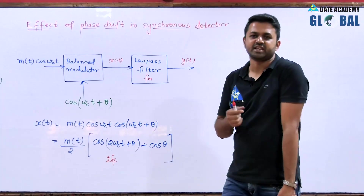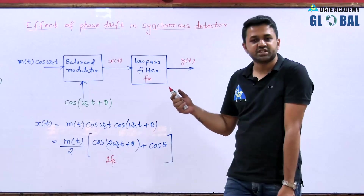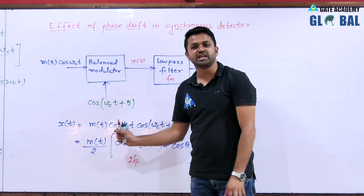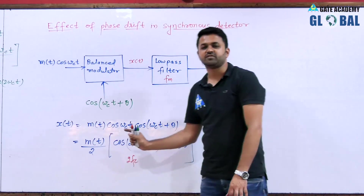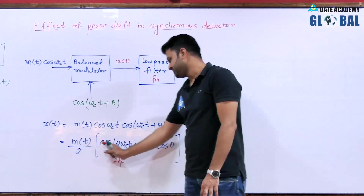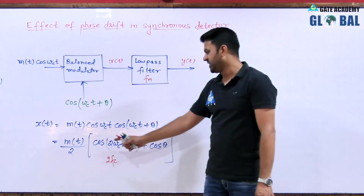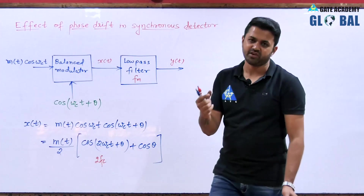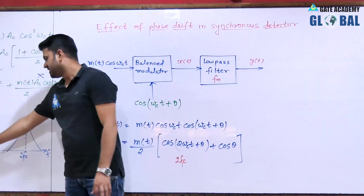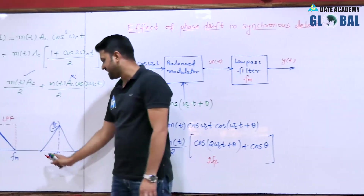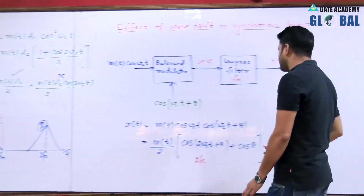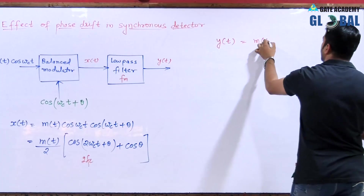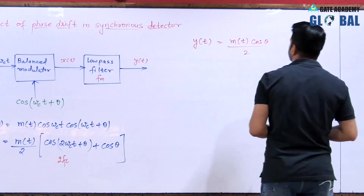Theta can be anything — 10°, 5°, 45°. Whatever the phase shift, it gives a constant value. This constant value will affect only the amplitude of the message signal; it will not change the frequency of the signal. So m(t)·cos(2ωC·t) shifts to 2FC, but when m(t)/2 is multiplied with cos(θ), the frequency does not change and remains FM. So we get the same type of spectrum: one component centered at 2FC and one extending up to FM. At the output of the low pass filter, y(t) = m(t)·cos(θ)/2.